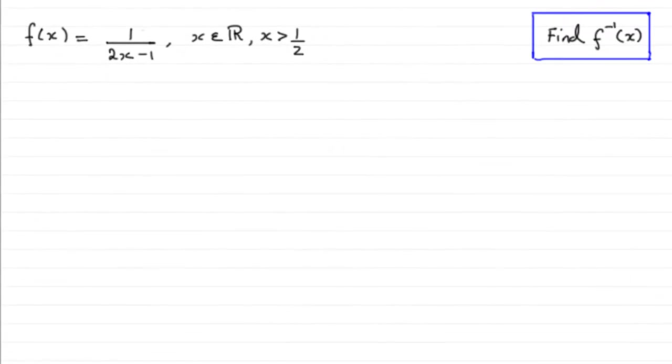Now for this part of the question, we've already seen in an earlier part that f of x can be reduced to 1 divided by 2x minus 1, where x is any real number and x is greater than half. But for this question we need to find the inverse function of f of x.